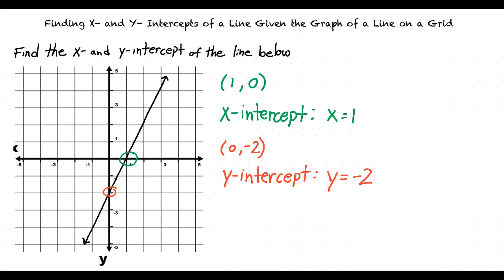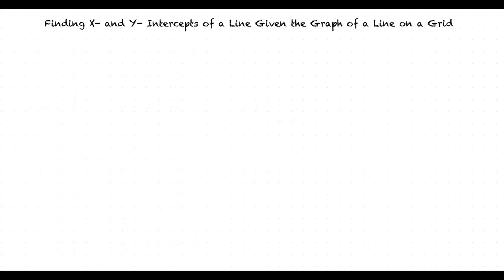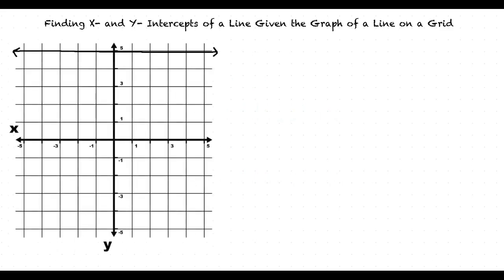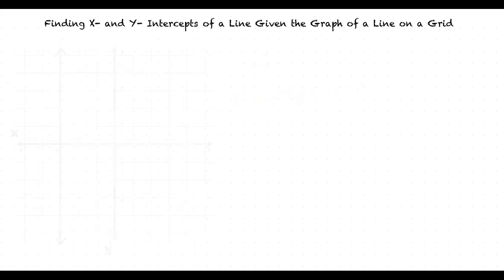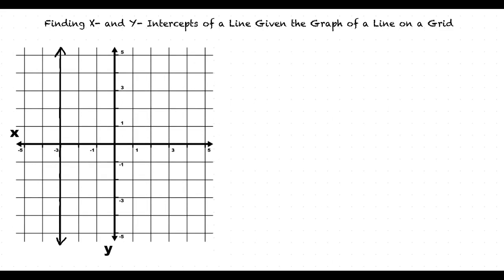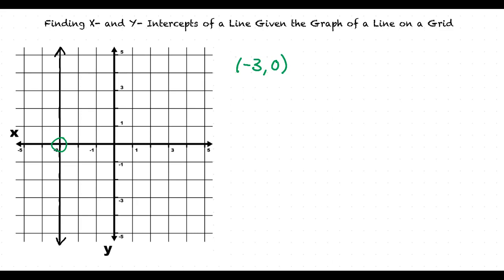Let's try and find the intercepts for a horizontal and for a vertical line. The first line is a horizontal line. Because it is a horizontal line, it will only have a y intercept. The horizontal line intercepts the y axis, so the y intercept is y equals 5. The vertical line intercepts the x axis, so the x intercept is x is equal to negative 3.